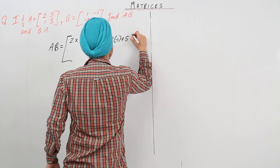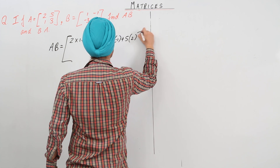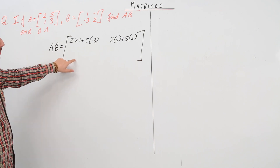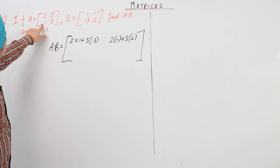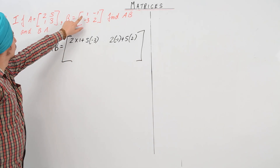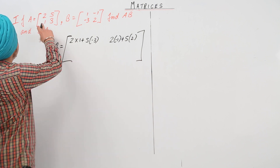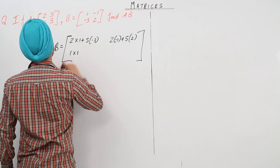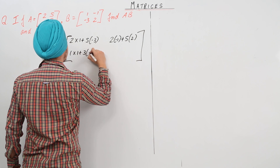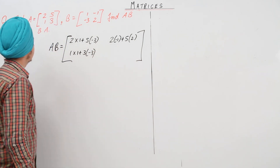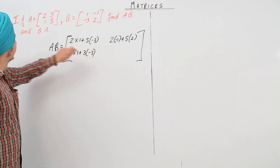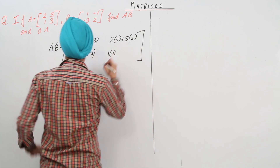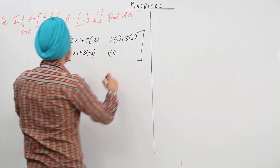For the term AB(2,1) we have 1 into 1 plus 3 into minus 3, and for the term AB(2,2) we have 1 into minus 1 plus 3 into 2.